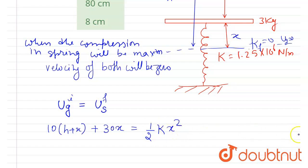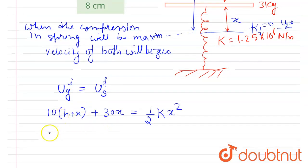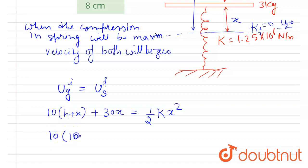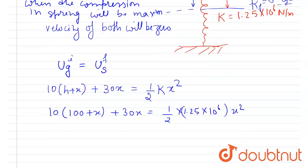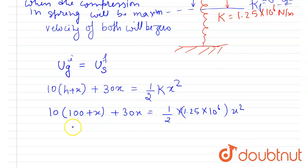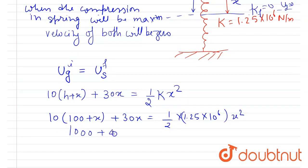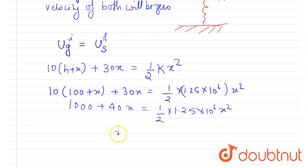Right, so just put the values: 10(100 + x) + 30x = (1/2) × 1.25 × 10^6 × x². So I will write: 1000 + 40x = (1/2) × 1.25 × 10^6 × x². If you solve this, you will get the value of x equals 4 centimeters as the answer.